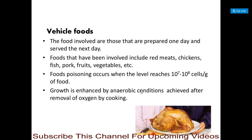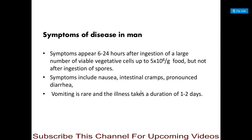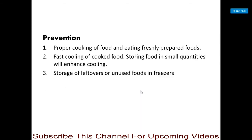Growth is enhanced by anaerobic conditions achieved after removal of oxygen by cooking. Symptoms appear 6 to 24 hours after ingestion of a large number of viable vegetative cells — up to 5 × 10⁸ per gram of food — but not after ingestion of spores. Symptoms include nausea, intestinal cramps, or diarrhea. Vomiting is rare and illness lasts 1 to 2 days.